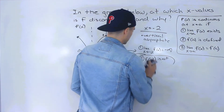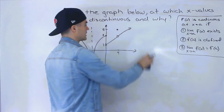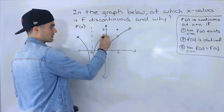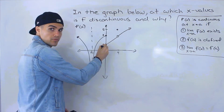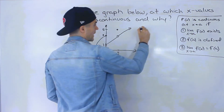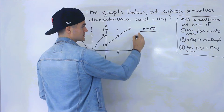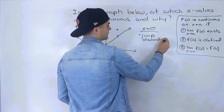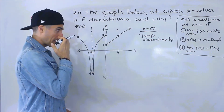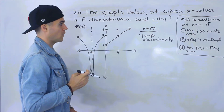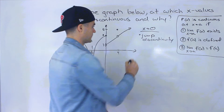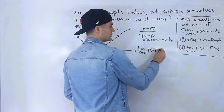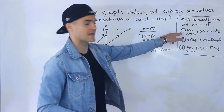Continuing on the graph, the next x value where it's discontinuous is x = 0. We get here and there's a jump — we have to take our pencil off the paper. So the function is also discontinuous at x = 0, and the reason is a jump discontinuity. More specifically, the limit as x approaches 0 of f of x does not exist, which breaks that first condition of continuity.